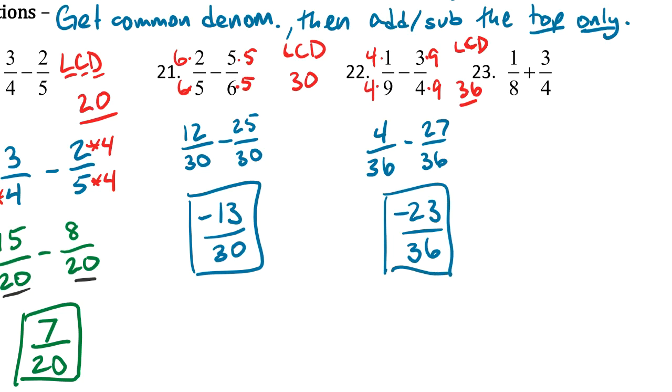Again, it doesn't reduce or anything like that, so we're done. One left. So 1/8 plus 3/4. So the LCD is going to be 8. So for the left fraction, how do we change an 8 into an 8? Well, we don't have to. It's already an 8. So we're just going to leave the left fraction alone completely. But for the right one, how do we change a 4 into an 8? Well, we'll multiply it by 2. So multiply top and bottom by 2. So we're going to have 1/8 plus 6/8. Bottoms are the same now, so just add up those tops. So 1 plus 6 is 7, and still over 8, and we are done.